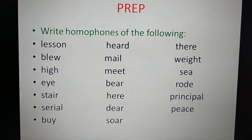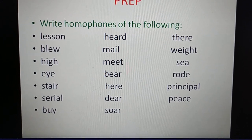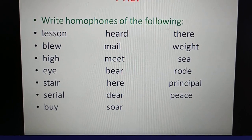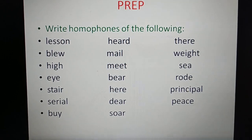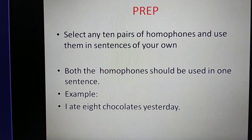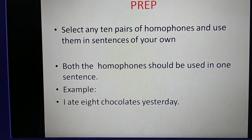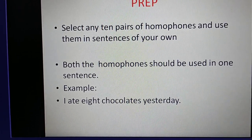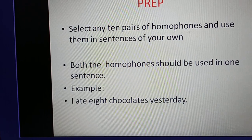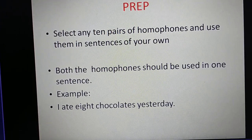So now we have some prep for you. Write homophones of the following words — a list of words is given. Remember that these words should have the same sound, the meanings are different, and the spellings are different. Then select any 10 pairs of homophones and use them in sentences of your own. Both homophones should be used in one sentence. For example, 'I ate 8 chocolates yesterday' — the homophones A-T-E and E-I-G-H-T are used in the same sentence. You should have 10 sentences using 10 pairs of homophones.